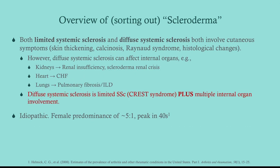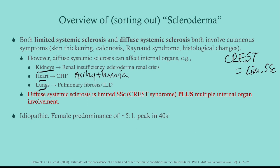Both limited and diffuse will involve the CREST features. Limited systemic sclerosis used to be called CREST syndrome — it's basically the same thing. With diffuse systemic sclerosis, you can also get internal organ involvement, particularly the kidneys, heart, and lungs. At the kidneys you can get renal insufficiency and scleroderma renal crisis. With the heart you can get congestive heart failure and arrhythmias — get an EKG on new diagnosis. The lungs can develop pulmonary fibrosis and interstitial lung disease. This tends to happen in women, usually presenting in the 30s and 40s.